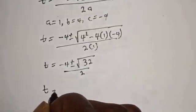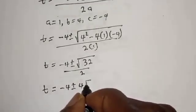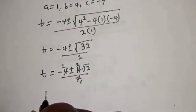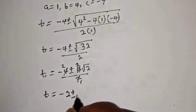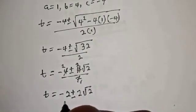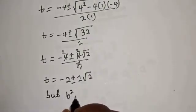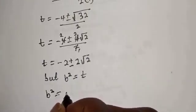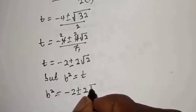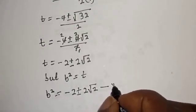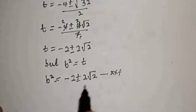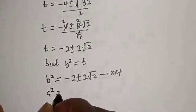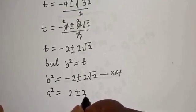This gives t equals minus 4 plus or minus square root of 32 over 2, which equals minus 4 plus or minus 4 root 2 over 2. Simplifying — dividing by 2 — t equals minus 2 plus or minus 2 root 2. Since b squared equals t, we have b squared equals minus 2 plus or minus 2 root 2. Call this equation star star star. So we now have a squared equals 2 plus or minus 2 root 2, and b squared equals minus 2 plus or minus 2 root 2.